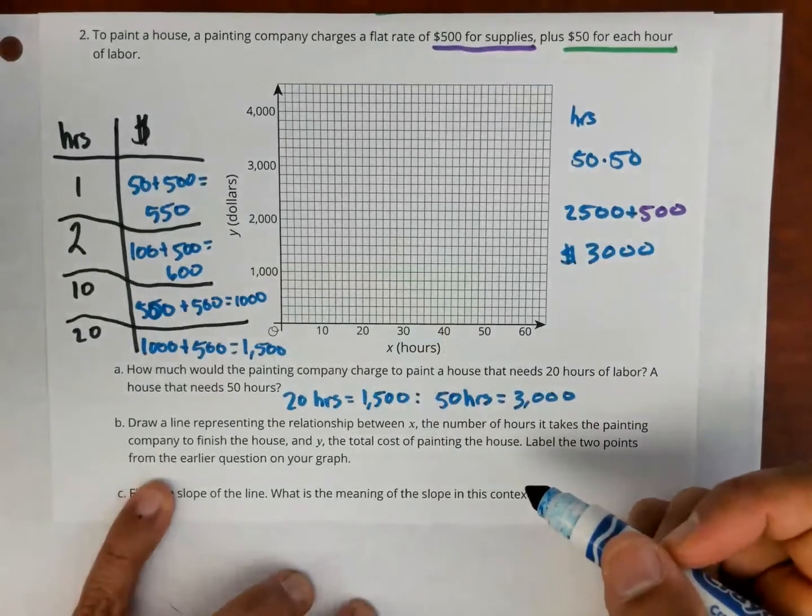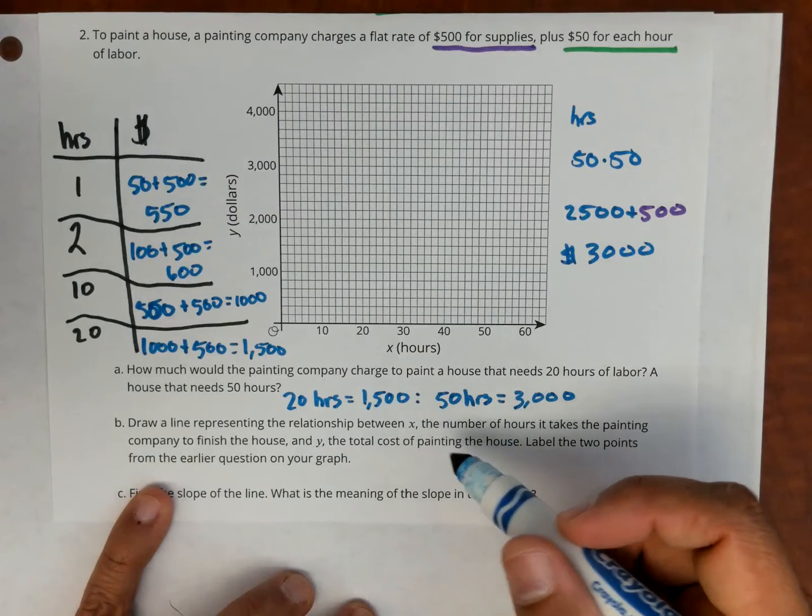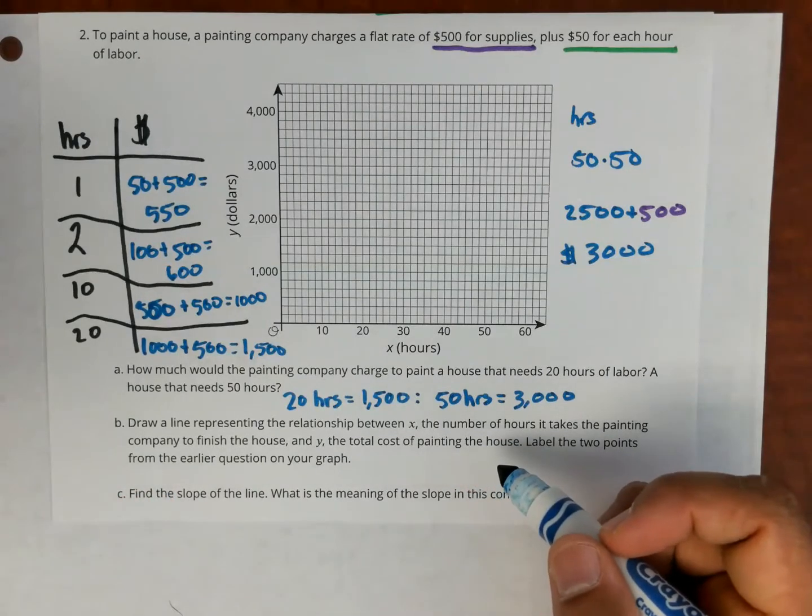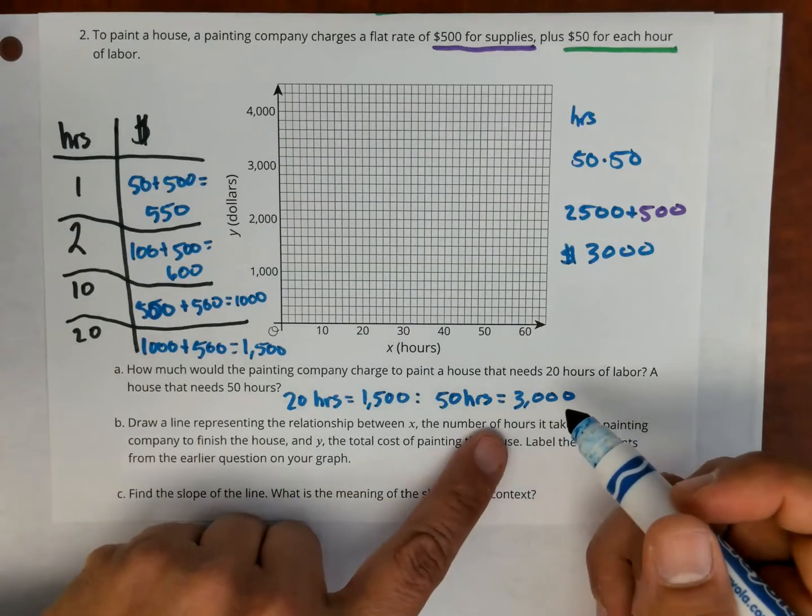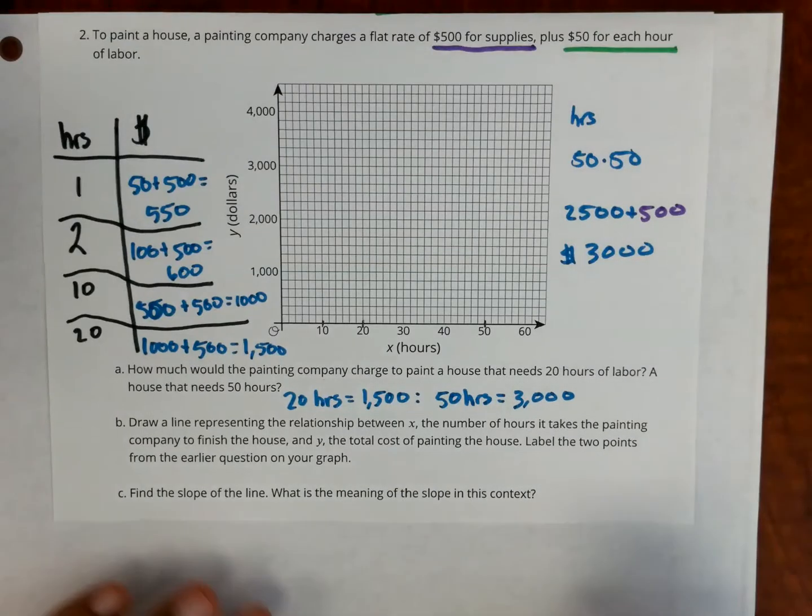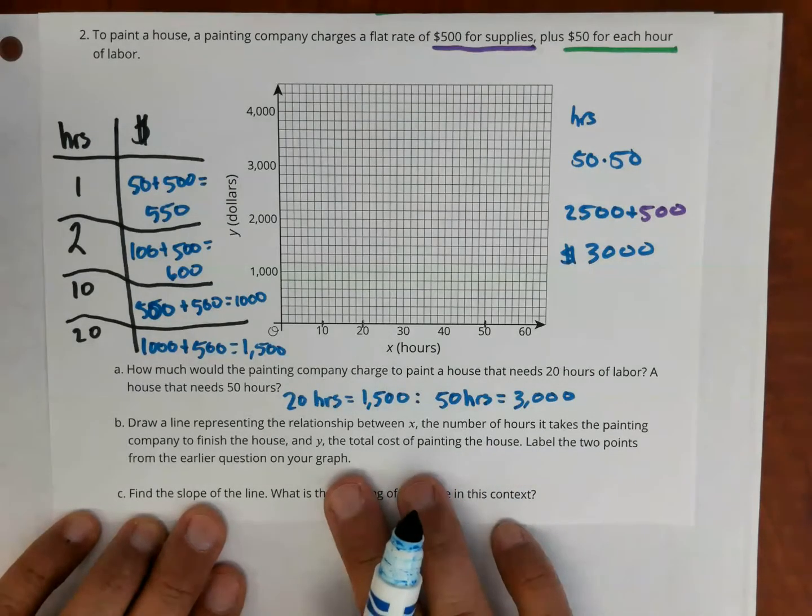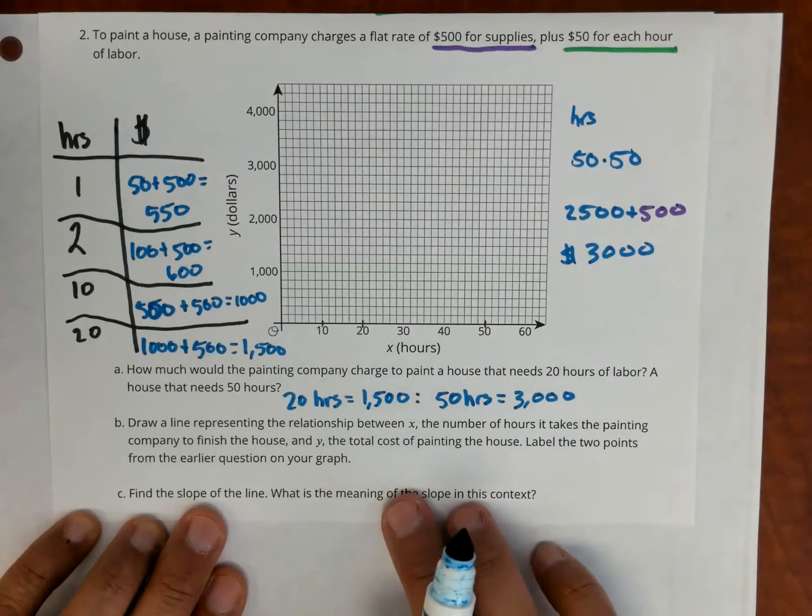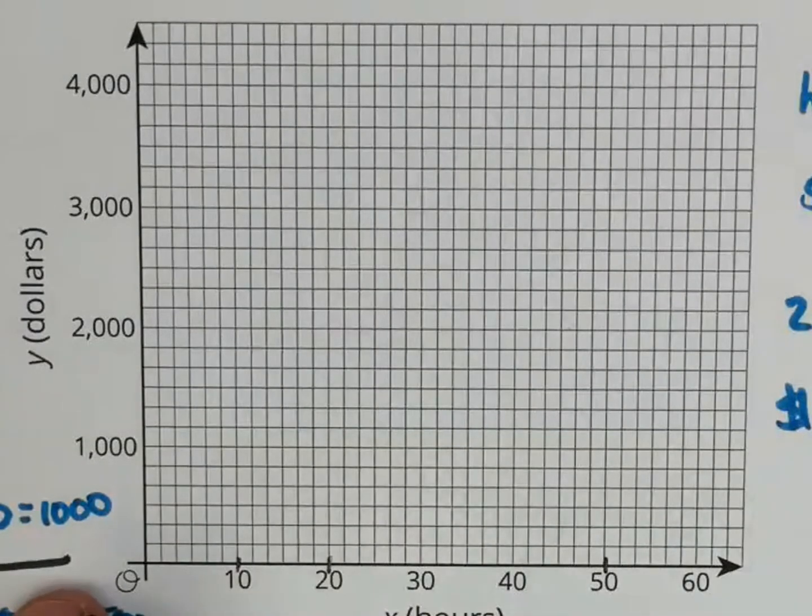Alright, so now I'm going to do Part B. Draw a line representing the relationship between X, the number of hours it takes to paint the house, and Y, the total cost of painting. Label the two points on the graph. So I'm going to make sure that I label 20 hours and 50 hours. I'm going to take points here on the table. I'm going to start with 10 just because of the way the scale is. I know 10 is 1,000.